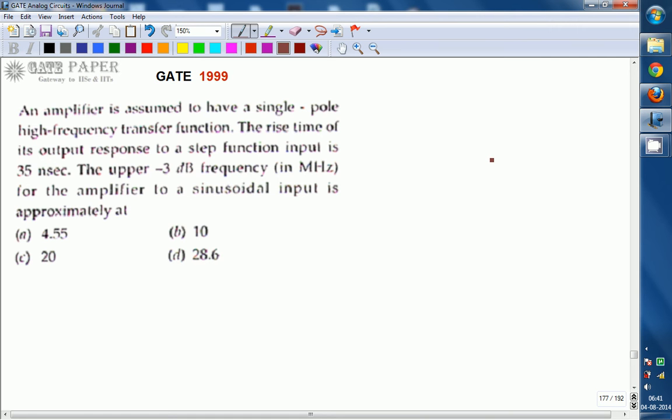An amplifier is assumed to have a single pole high frequency transfer function. The rise time of its output response to a step function input is 35 nanoseconds. The upper 3 dB frequency for the amplifier to a sinusoidal input is approximately in MHz.